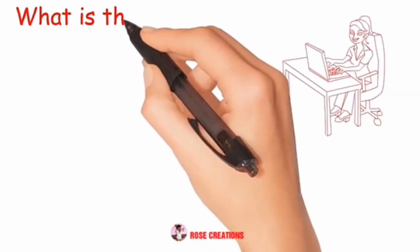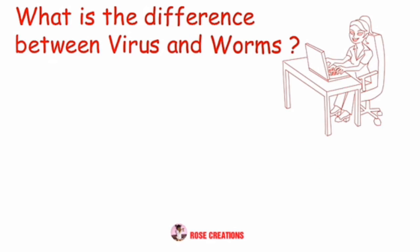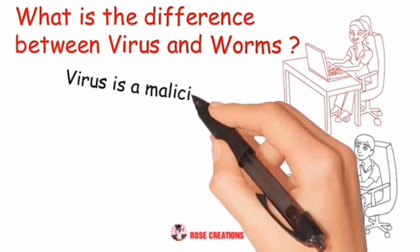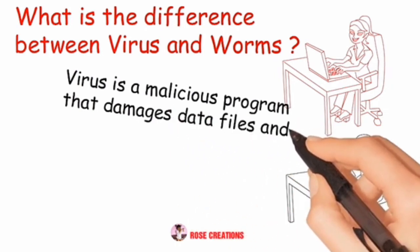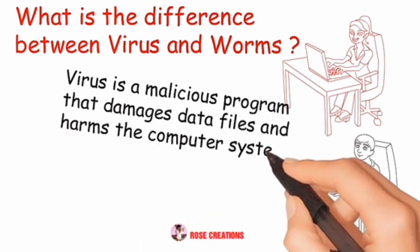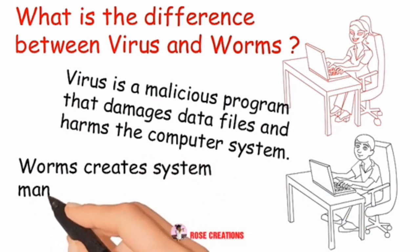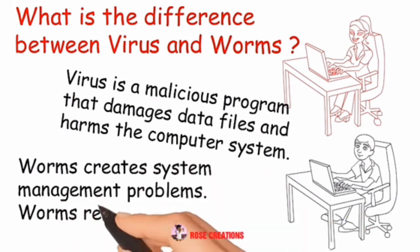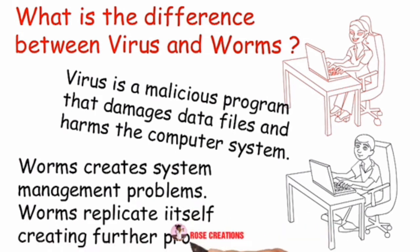What is the difference between a virus and worms? A virus is a malicious program that damages data files and harms the computer system. Worms create system management problems and replicate themselves, creating further problems.